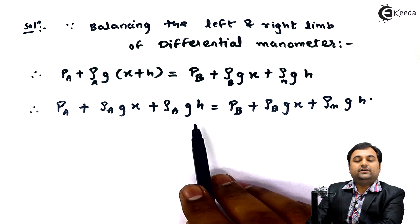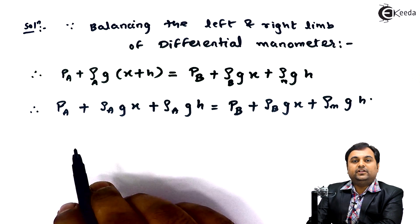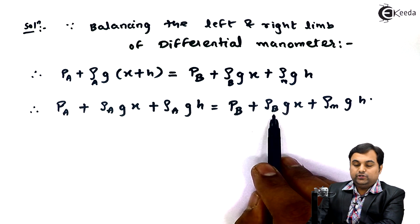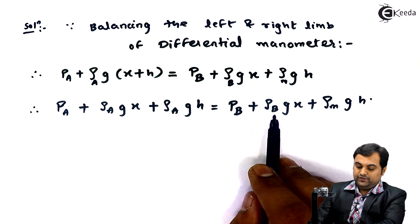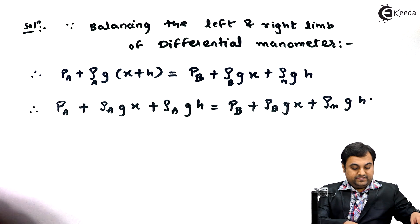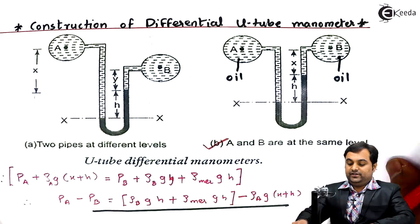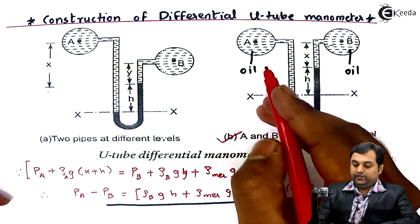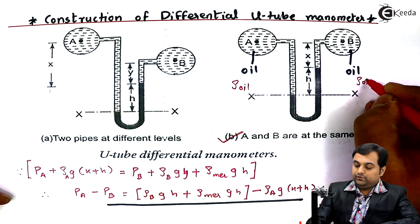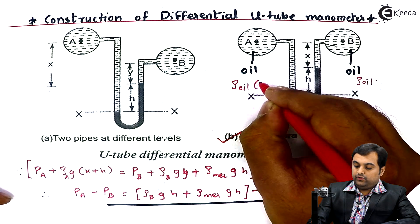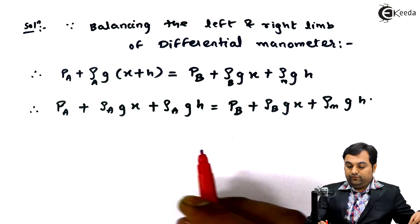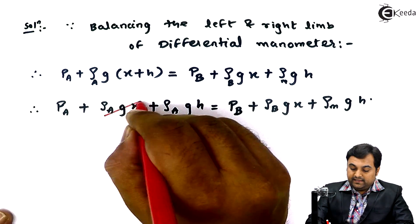Expanding the brackets: PA + rho_a·G·X + rho_a·G·H = PB + rho_B·G·X + rho_M·G·H. Now, since we are using oil on both sides, rho_a equals rho_B — this is a very important consideration. Both pipelines contain oil, so the density of oil is the same in both pipes. Therefore the rho_a·G·X and rho_B·G·X terms cancel out.